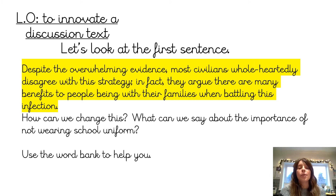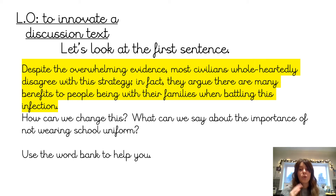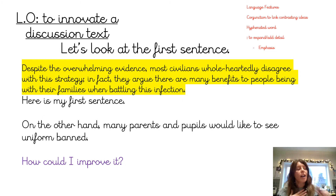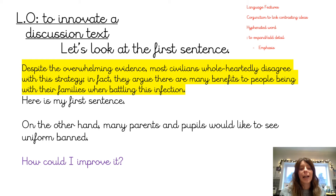So the first sentence, from the model text, started with: 'Despite the overwhelming evidence, most people wholeheartedly disagree with this strategy. In fact, they argue that there are many benefits.' We've got to write a sentence to start this paragraph saying that we don't think uniform is that important. I've said: 'On the other hand, many parents and people would like to see uniform banned.' So I'm stating the purpose of this paragraph — I'm going to tell you why it should be banned.